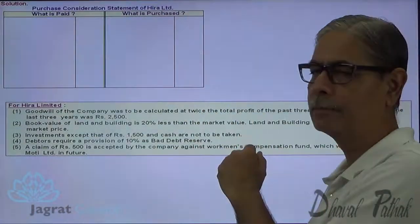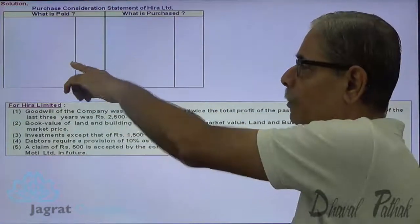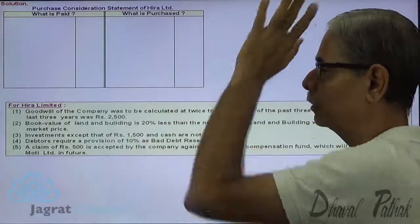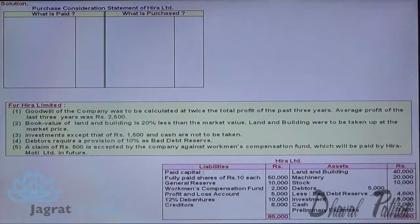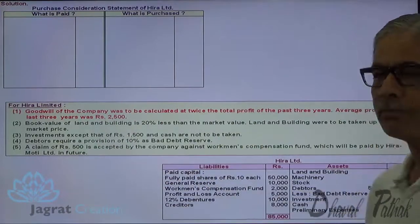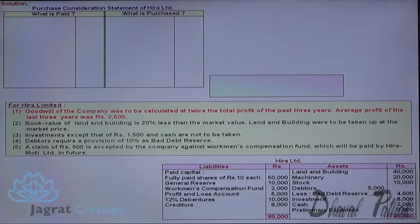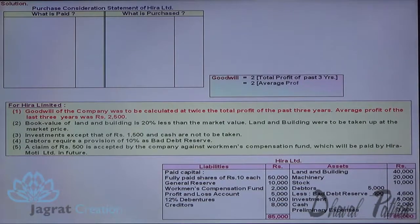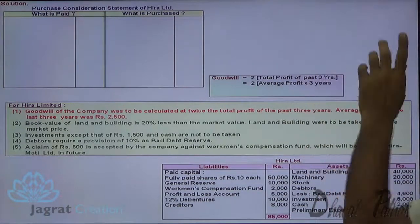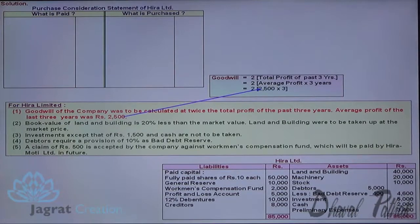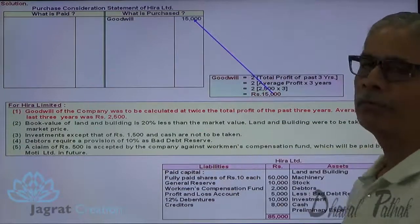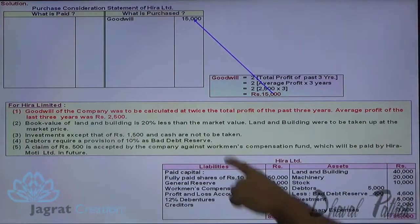Working note for goodwill: goodwill is equal to two times the total profit of the past 3 years. Total profit of past 3 years equals average profit multiplied by 3 years, so: 2 × 2,500 × 3 = 15,000 is the value of goodwill. So goodwill is purchased at a price of 15,000 by Hira Muthi Ltd.